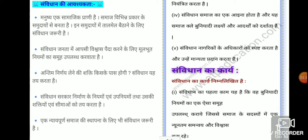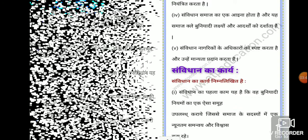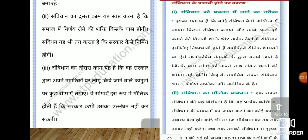The Samvidhan ensures that a minimum level of coordination and trust is maintained among the members of society. The second function of the Samvidhan is to decide who will have the power to make decisions in society. The Samvidhan also determines how the government will be formed. The third function is to place certain limits on the laws that the government can impose on its citizens — limits so fundamental that the government can never violate them.